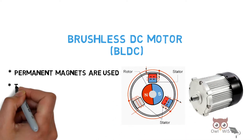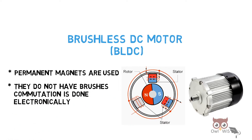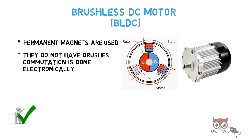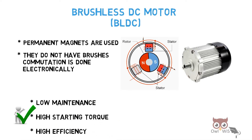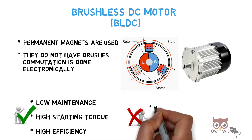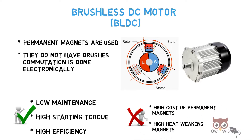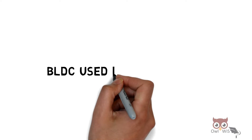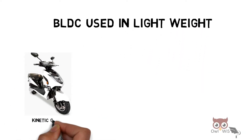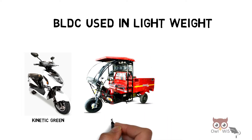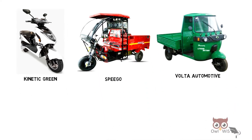Next, brushless DC motors. These use permanent magnets in the rotors and do not have brushes — commutation is done electronically. The advantages are low maintenance, high starting torque, and high efficiency. Disadvantages are the high cost of permanent magnets and that high heat weakens the magnets. These are used in lightweight vehicles such as two-wheelers like Kinetic Green, and three-wheelers like Pigo and Volta Automotive.